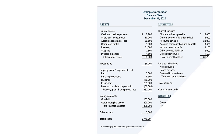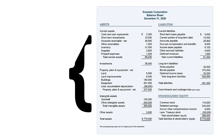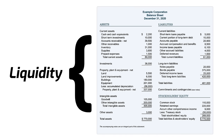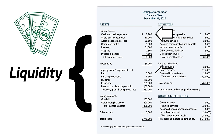It's also interesting to note that assets appear in the order of their liquidity — how quickly assets can be turned into cash. Cash is the most liquid asset because it's already cash. The most liquid assets are at the top, and the least liquid assets, like property, plant, and equipment, are at the bottom of the asset section.